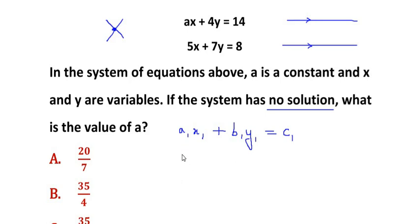And for the second line we write it as a2 x2 plus b2 y2 equals c2. So this is how we write the general equations for the two lines.